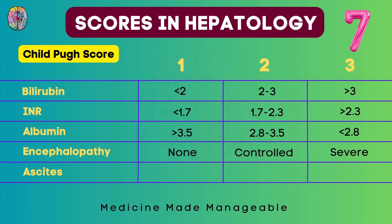For encephalopathy: if none is seen, score of 1; if it is controlled encephalopathy — meaning it gets controlled with medication — score of 2; if severe encephalopathy, score of 3. Ascites is scored the same way: none, controlled, and severe.